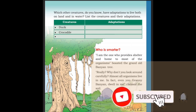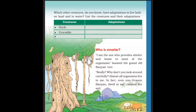Which other creatures do you know that live in both land and water? There are creatures like water snake, swans, duck, and crocodile — so many creatures living in water have adaptations to live both on land and in water. List the creatures and their adaptations.